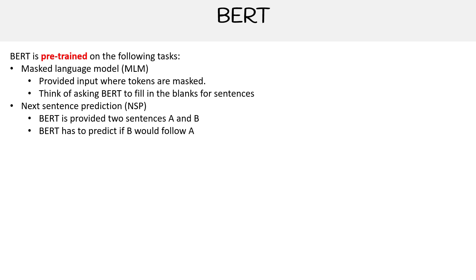The other part of pre-training is next sentence prediction. You provide two sentences, A and B, and BERT will predict if B would follow A. By being trained on these two things, it gives BERT the ability to be contextually aware of sentences and very good at natural language processing.